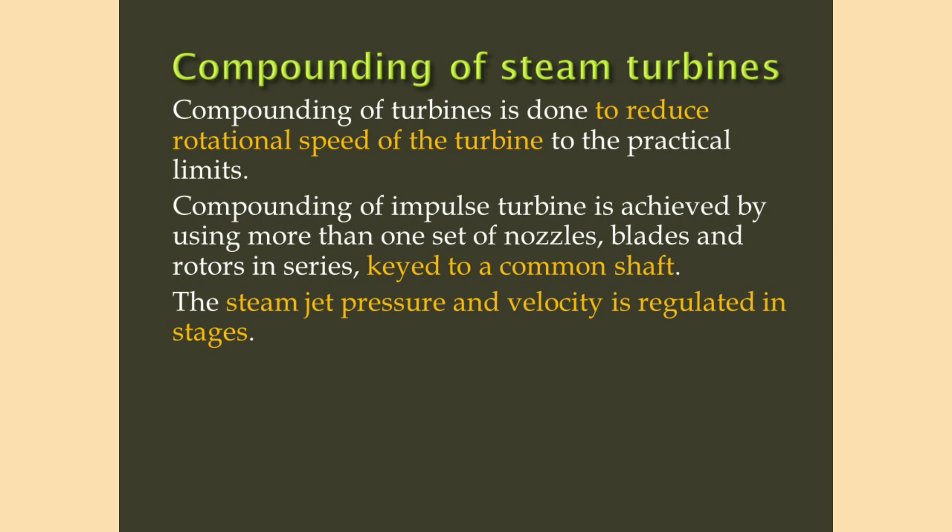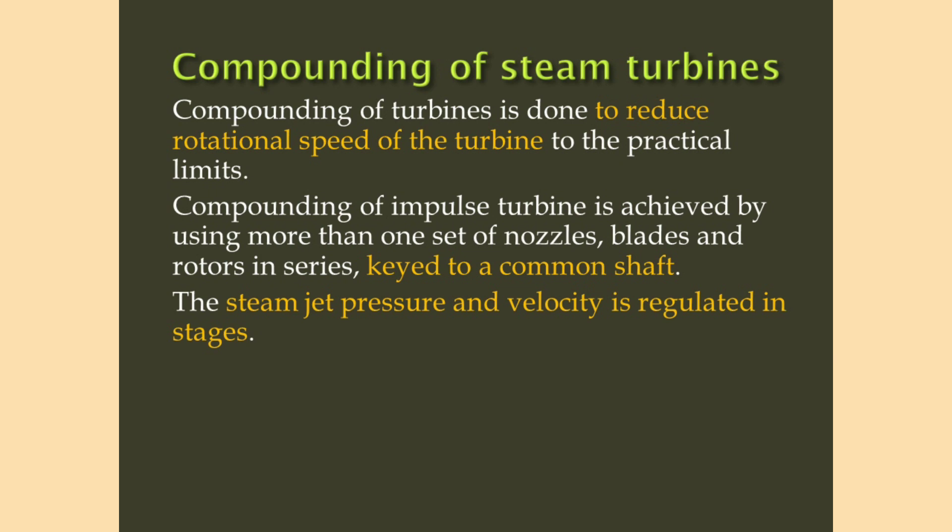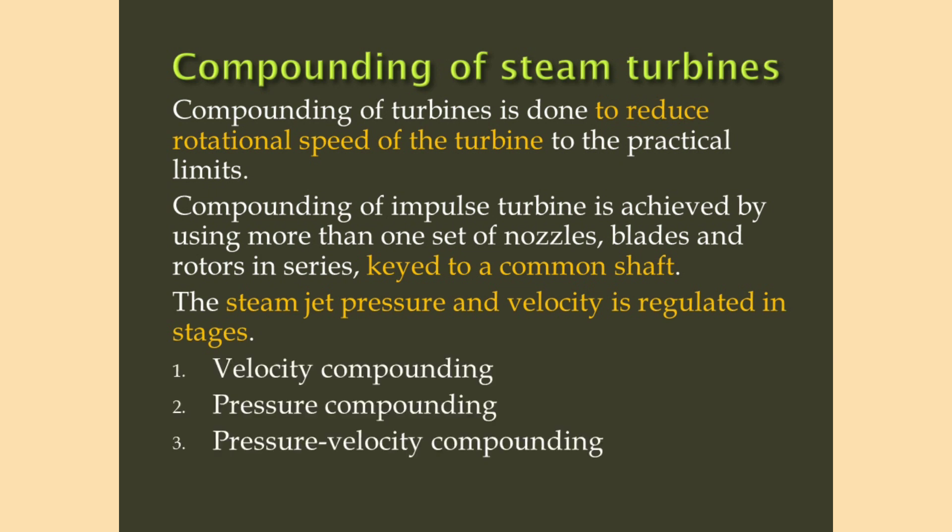Reaction turbines always use multiple stages, meaning compounding is always used in reaction turbines. For impulse turbines, three types of compounding methods are used: velocity compounding, pressure compounding, and pressure-velocity compounding.